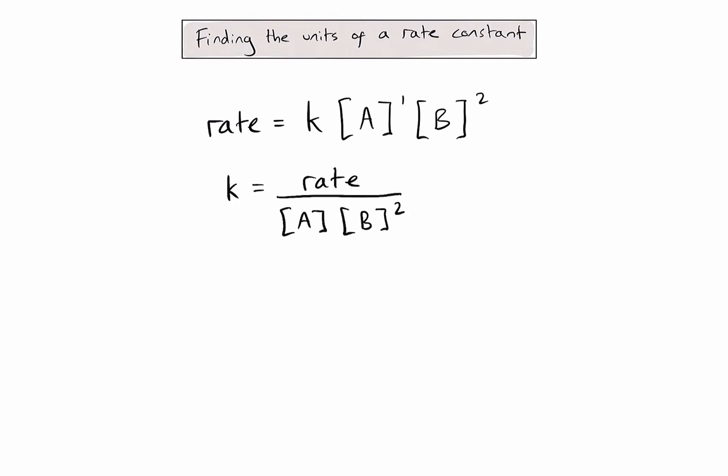Note that I can remove the exponent of 1 from the concentration of A, because anything to the power of 1 is just itself. So if I was asked to calculate the numerical value of k, I would simply need to look at my experimental data for the rate and the concentrations of A and B, and plug those numbers into this equation.